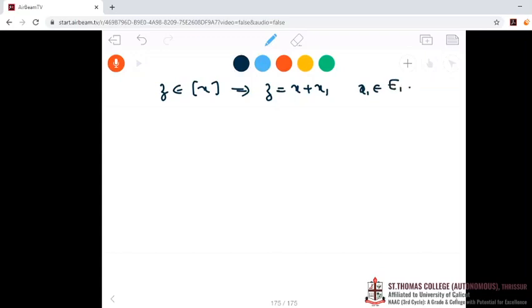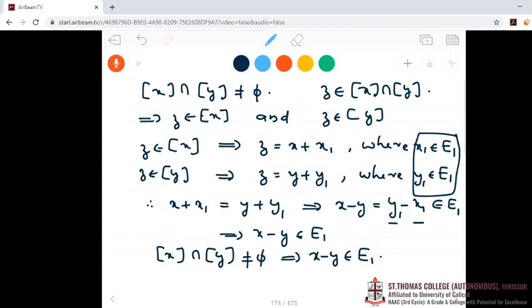Now I can write this Z as X minus Y plus Y plus X1. I am adding Y and subtracting Y, so actually there is no change. And this is same as Y plus X minus Y plus X1 because vector addition is commutative.